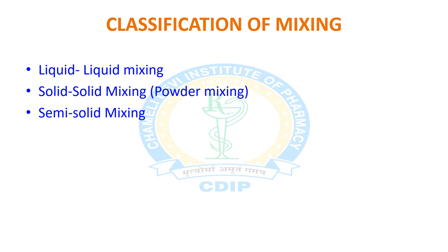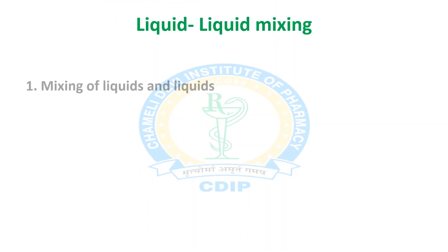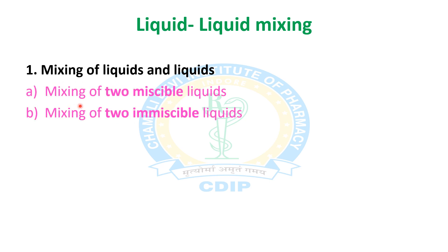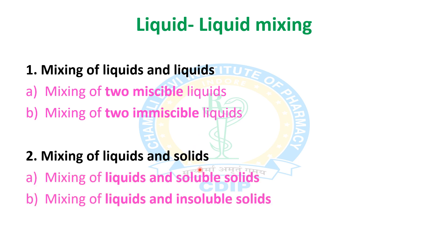Now let's see each individual kind of mixing. In liquid-liquid mixing, the first type is mixing of liquids and liquids, which includes mixing of two miscible liquids and mixing of two immiscible liquids. The second is mixing of liquids with solids, which consists of mixing of liquids with soluble solids and mixing of liquids with insoluble solids.